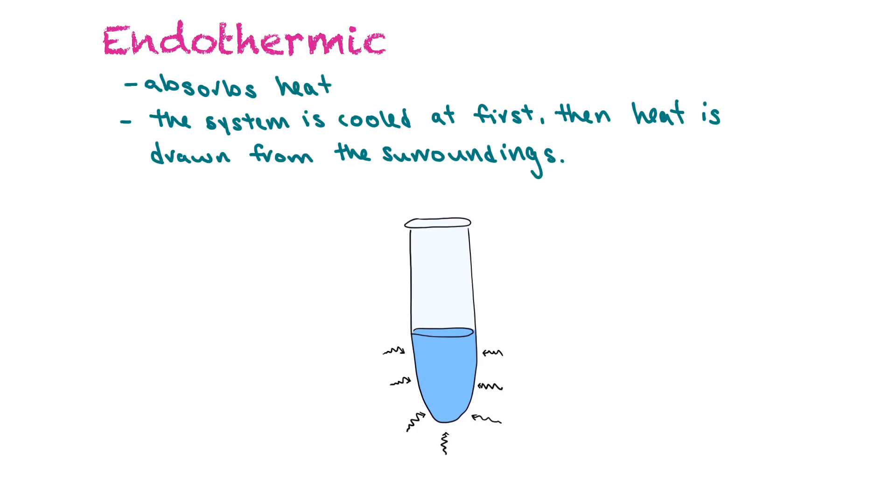An endothermic reaction absorbs heat, and the system is cooled at first, and then heat is drawn from the surroundings. The outer part of the test tube would feel cooler as time progressed.